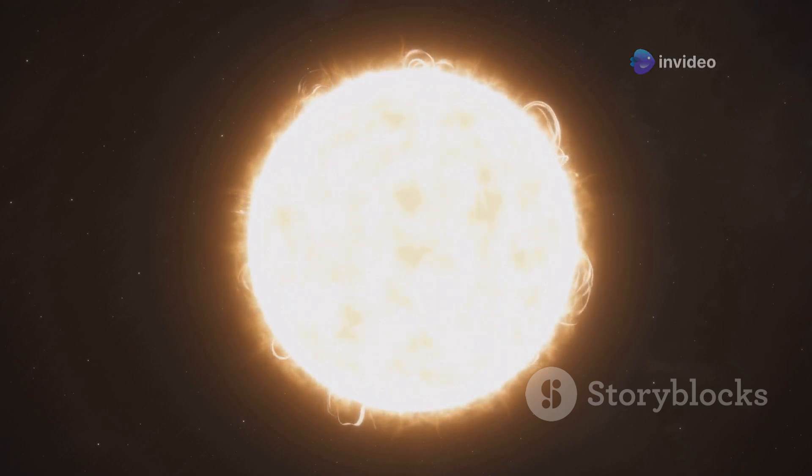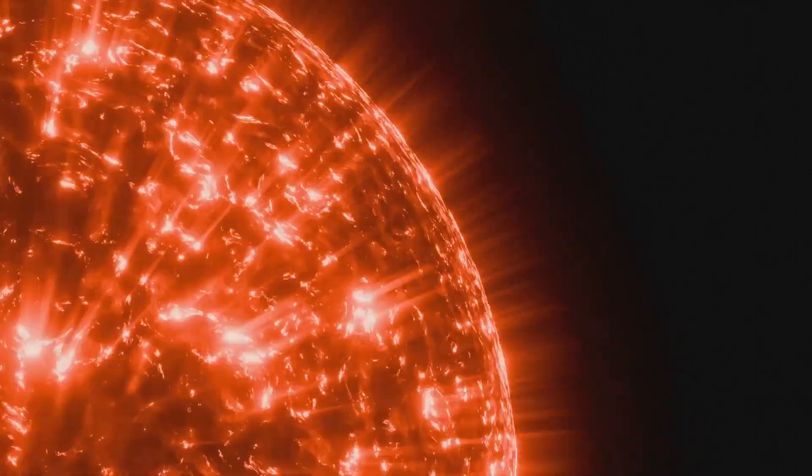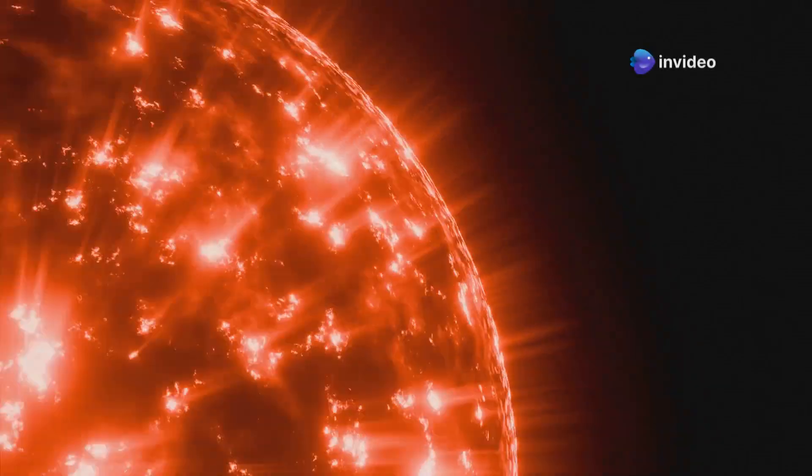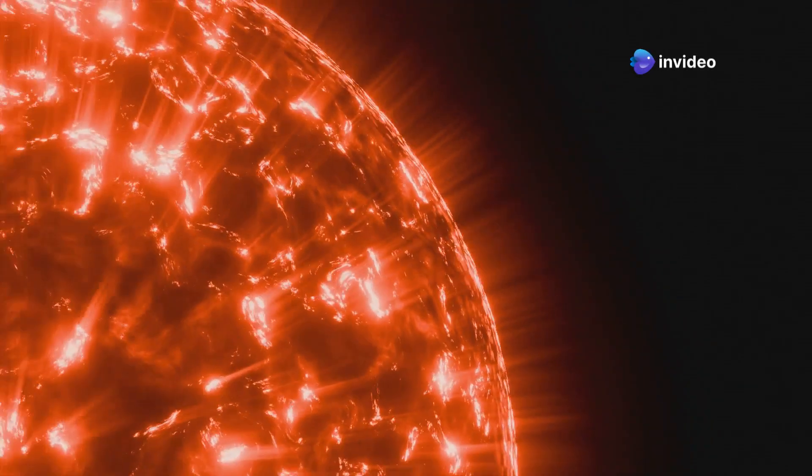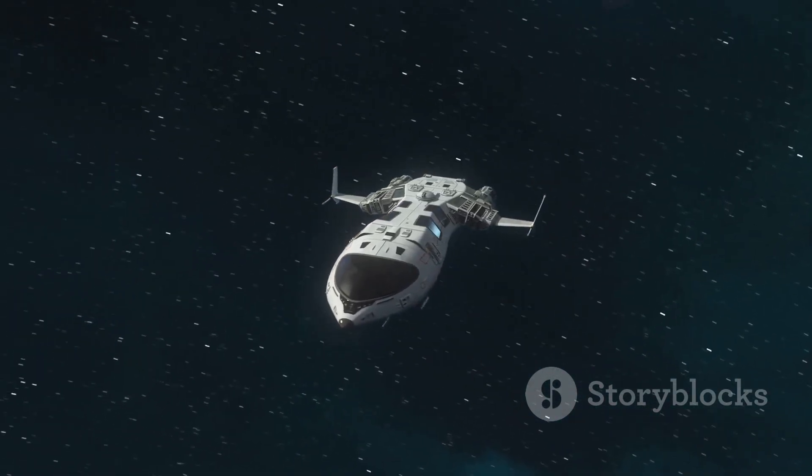The sun's diameter is a staggering 865,000 miles. It seems enormous by our standards, but in the universe it's just a drop in the ocean. When we compare it to the true giants of the cosmos, it pales in comparison. These hypergiant stars are so vast they could contain millions of suns within them.